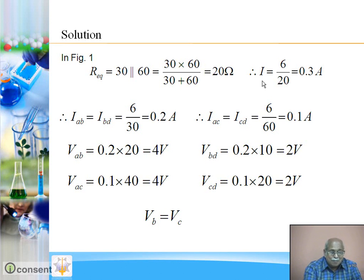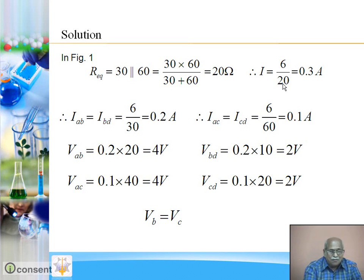So what will be the current supplied by the battery? Using Ohm's law, current I equals V upon R: 6 divided by 20, so the current supplied by the battery is 0.3 ampere.